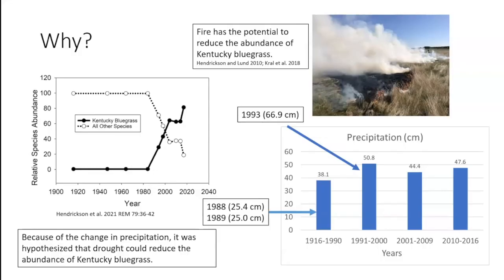The next project looks at axillary buds in Kentucky bluegrass under two treatments: burning and drought. Fire has the potential to reduce the abundance of Kentucky bluegrass, but there have been social constraints on using fire across the landscape. Also, data from our location in Mandan shows precipitation increased from about 15 inches per year between 1916 and 1990 to almost 20 inches in the 1990s. Some people said that a good drought would make Kentucky bluegrass go away — so we decided to test that.